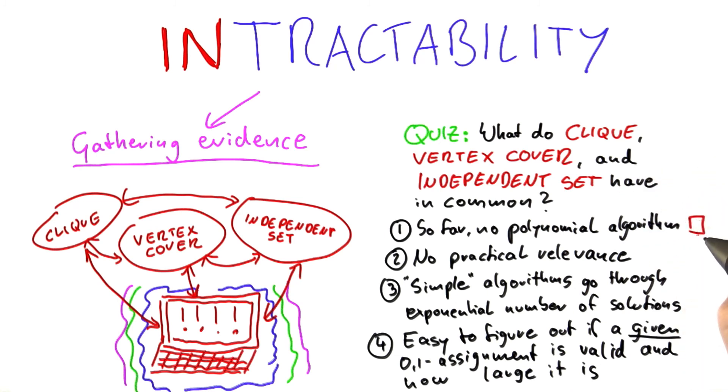So there's four possible choices here. Choice number one: we have not found a polynomial time algorithm for them yet. Choice number two: they are not practically relevant. Choice number three: the simple algorithms that we have found so far go through an exponential number of solutions. And finally, for those simple algorithms, for any given 0 and 1 assignment to the vertices, so we have already assigned the values of 0 and 1 to them, it is relatively easy to figure out if that assignment is a valid solution, and if it is a valid solution, how large that solution is. Please check all of these that are correct.